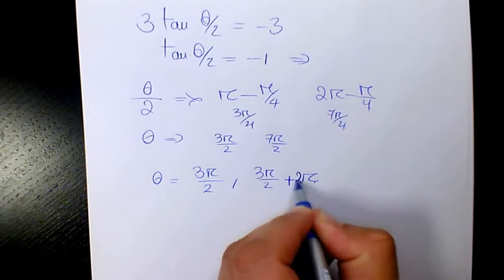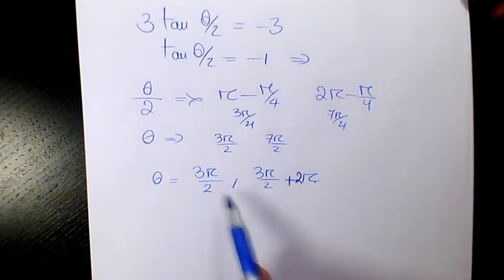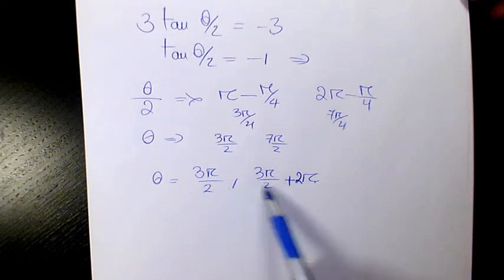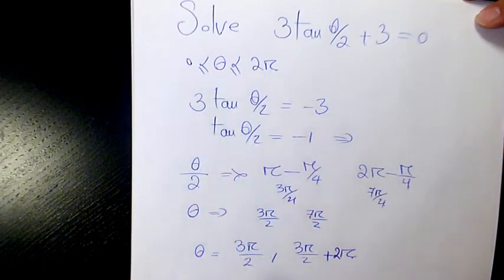Actually it's going to be 2π because that's 7π/2, so the answer is going to be like that. And as you see here, 7π/2 is outside the domain, so the answer is going to be only 3π/2.